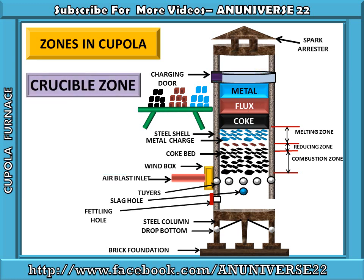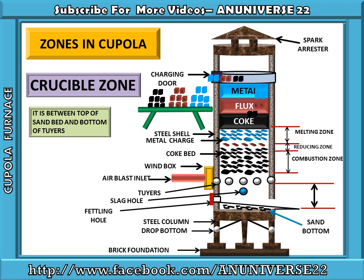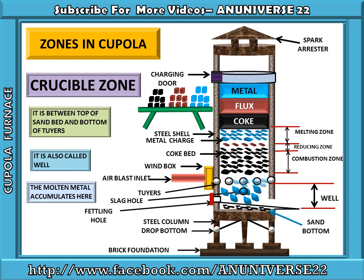Next part is the crucible zone. This is the zone in which basically molten metal is placed. It is between the top of the sand bed and the bottom of the tuyeres. This crucible zone is also known as the well. Molten metal accumulates here in this particular zone.